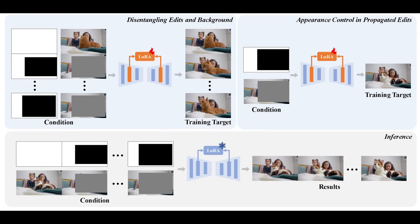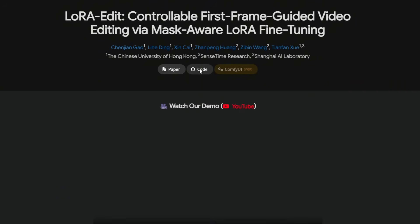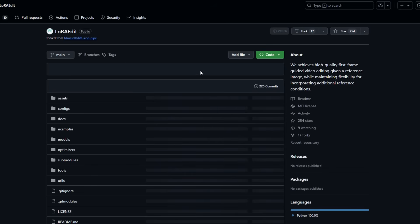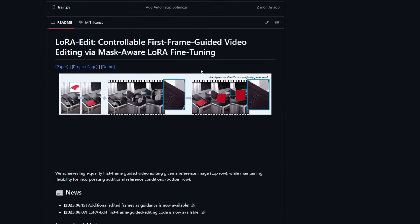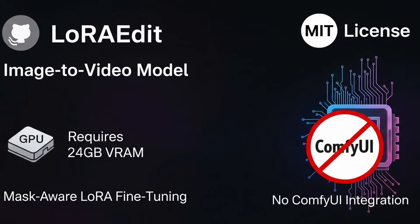Regarding availability, if you look at their project page, you'll find links to the paper and the code. It is fully open source under the MIT license, which means you can use it, modify it, and redistribute it as long as you follow the terms. LoRaEdit adapts a pre-trained image-to-video model via mask-aware LoRA fine-tuning and currently has no ComfyUI integration. To run it locally offline, you'll need a GPU with at least 24GB of VRAM.